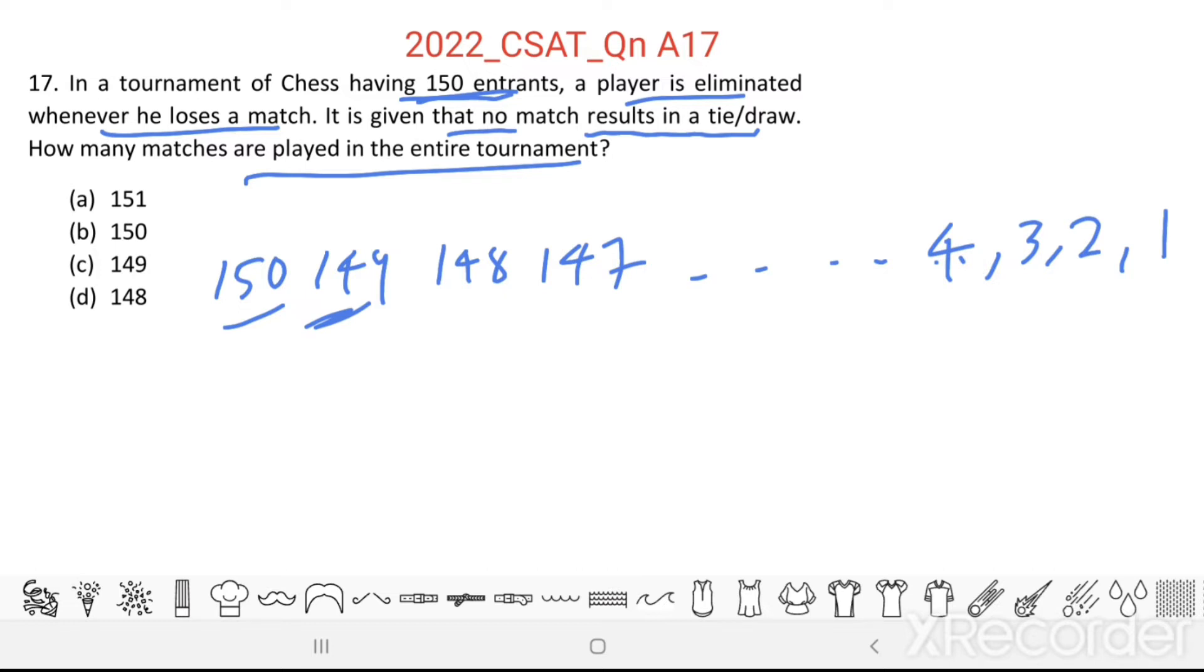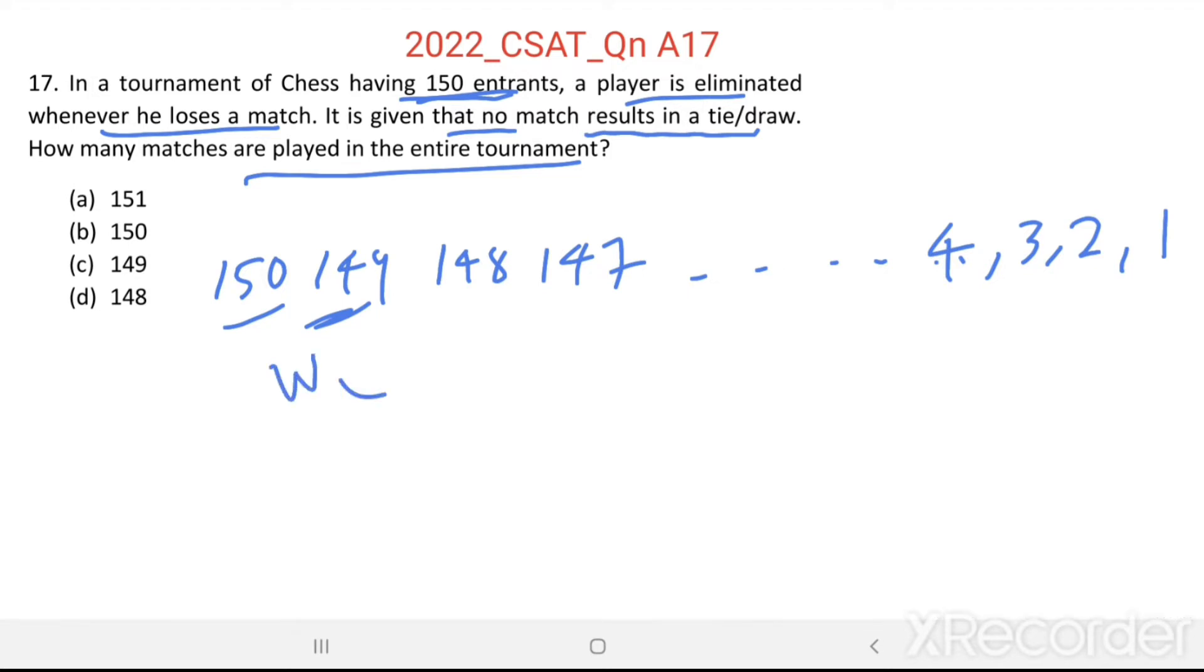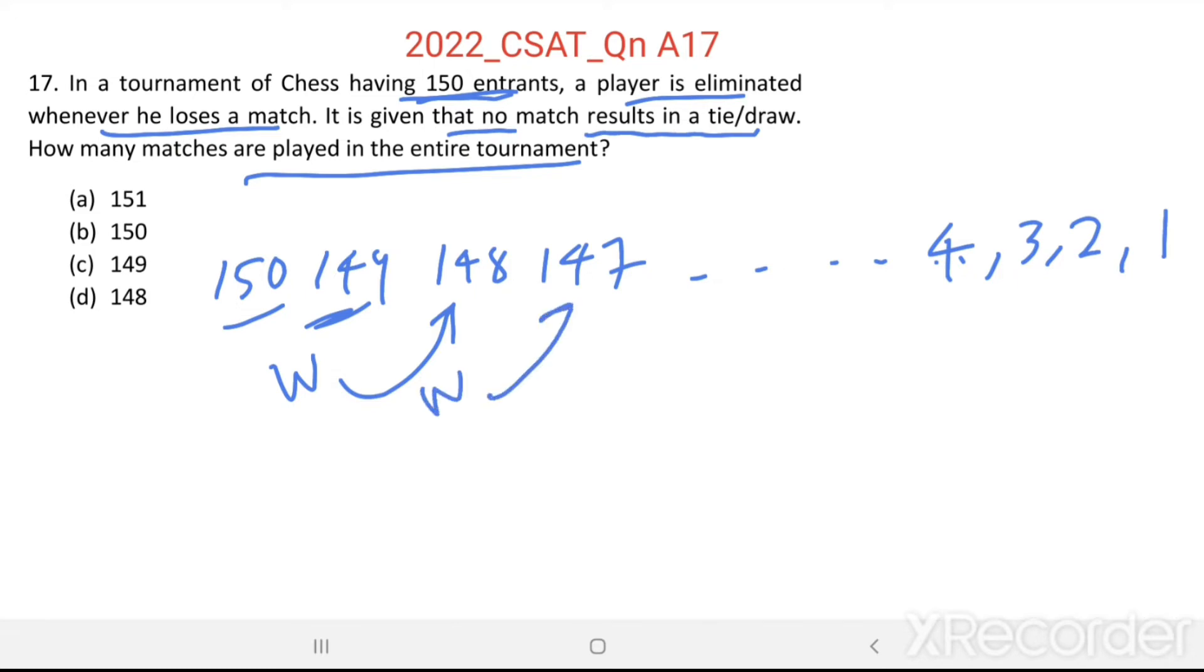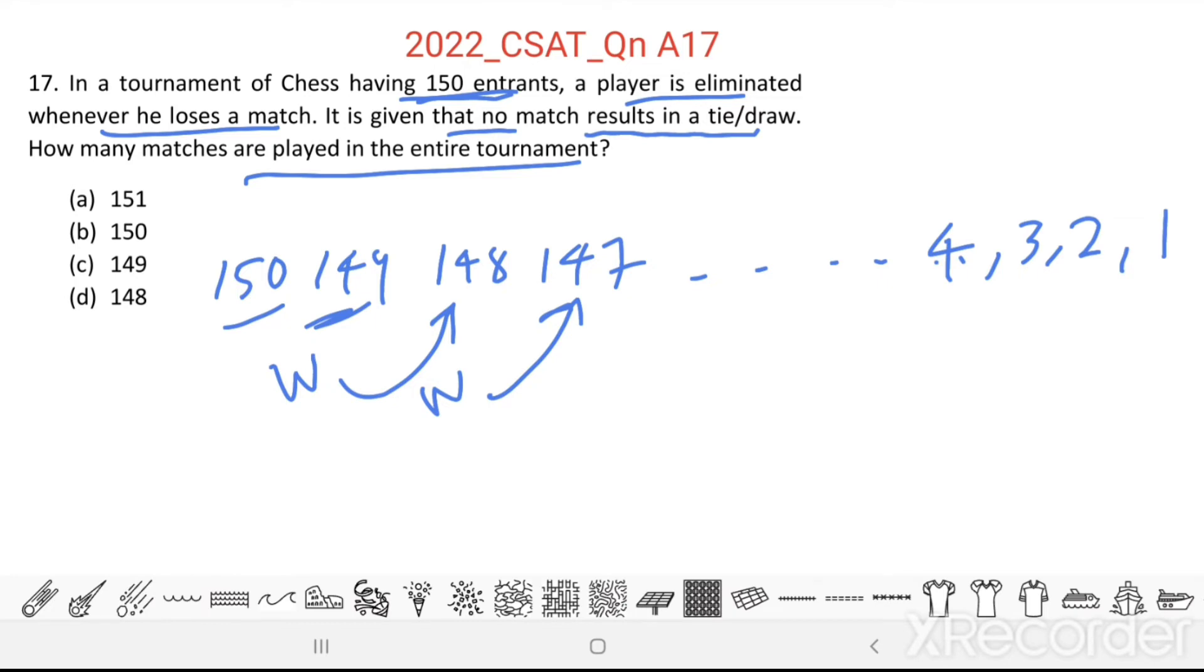And the winner of first match will play with the 148th ranked member. Then winner of this match will play with the 147th ranked member. So in each match, one man gets eliminated.